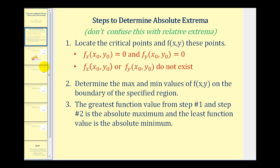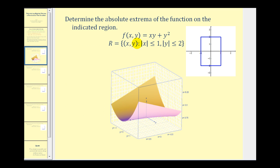Let's take a look at an example. Here we want to determine the absolute extrema of the given function on the region where the absolute value of x is less than or equal to one, and the absolute value of y is less than or equal to two. This means that x is between positive one and negative one, and y is between negative two and positive two.